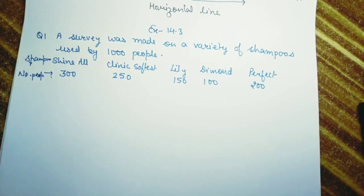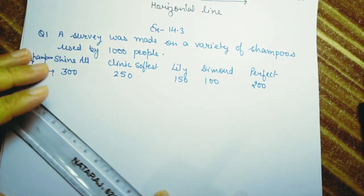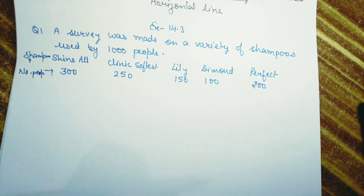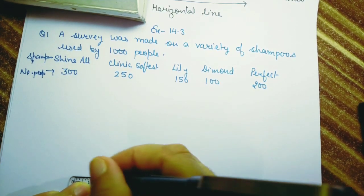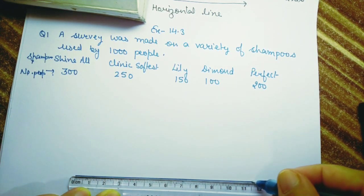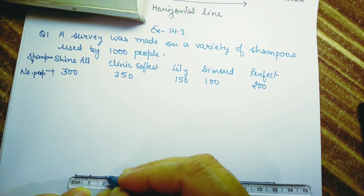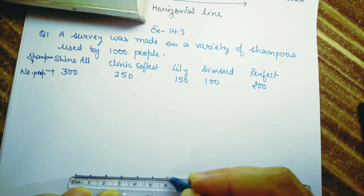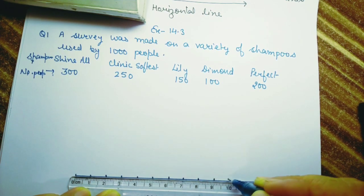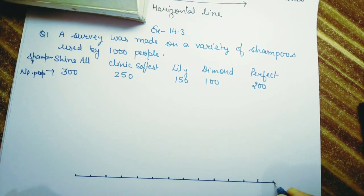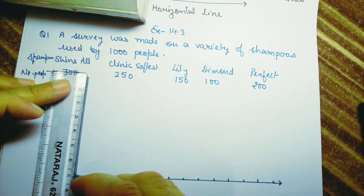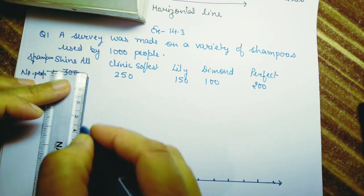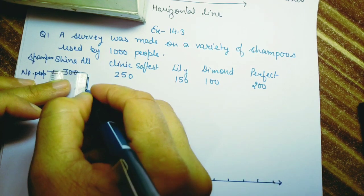Let's start drawing the bar graph. First we draw the X-axis and mark it at one centimeter intervals: 1, 2, 3, 4, 5, 6, 7, 8, 9, 10, 11, 12, 13 and so on. Then we draw a perpendicular line and mark the Y-axis at the same one centimeter intervals.